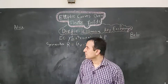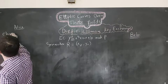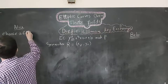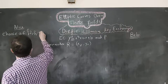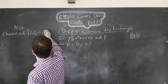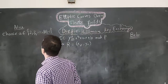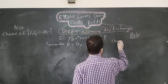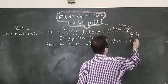Now, Alice will choose a number A from the set {2, 3, ..., cardinality of the elliptic curve minus 1}. Similarly, Bob will choose a number B from the same set.